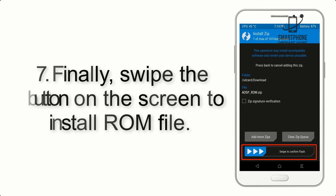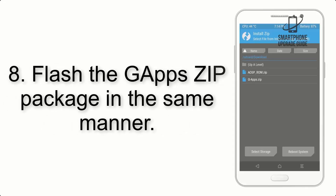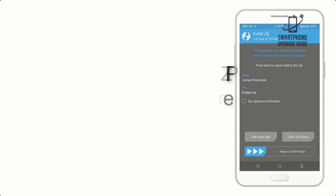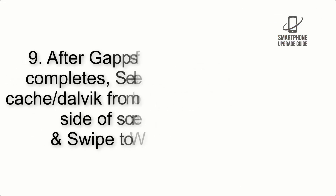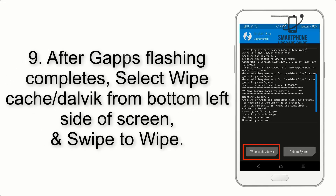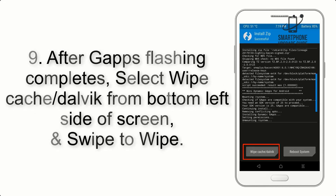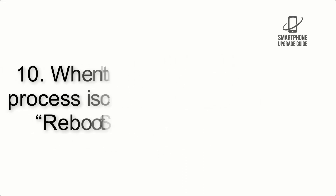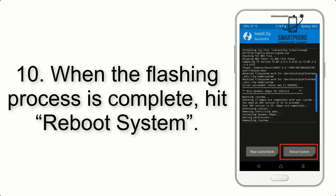Step 7: Swipe the button on screen to install the ROM file. Step 8: Flash the GApps zip package in the same manner. Step 9: After GApps flashing completes, select Wipe Cache and Dalvik from the bottom left side of the screen and swipe to wipe.